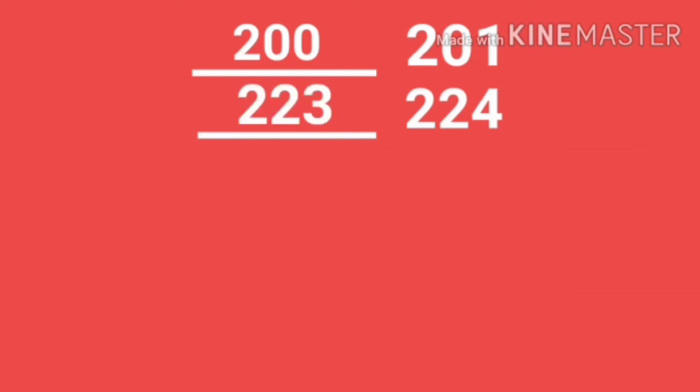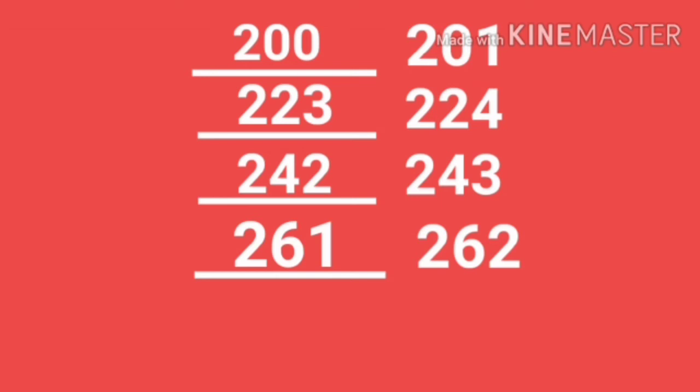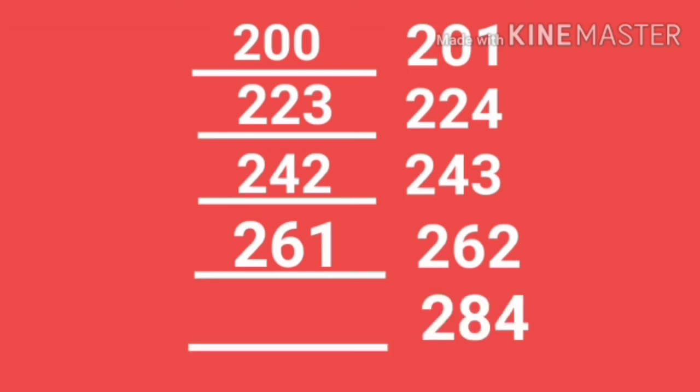The before number for 224 is 223. The before number for 243 is 242. The before number for 262 is 261. The before number for 284 is 283.